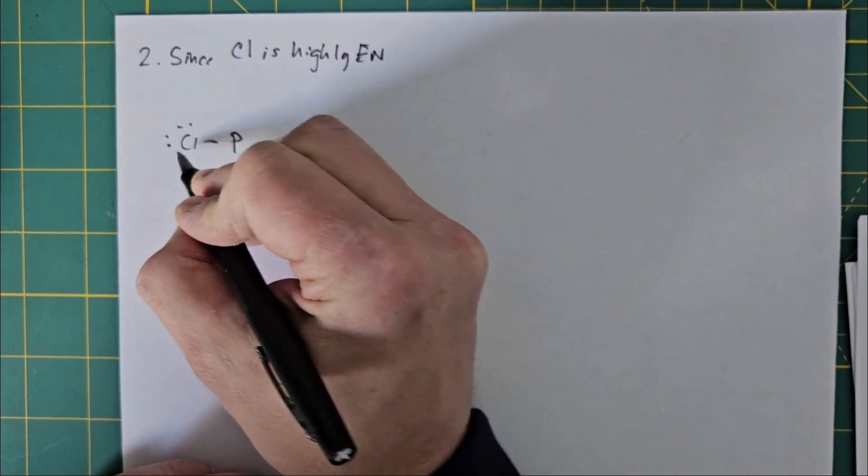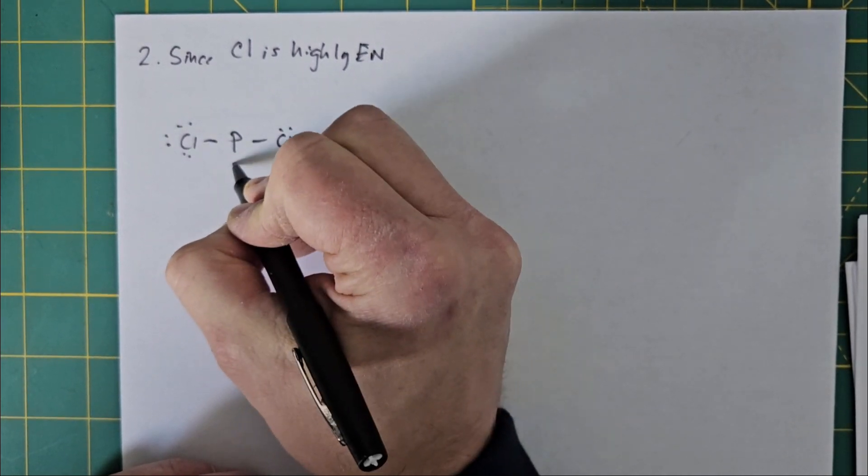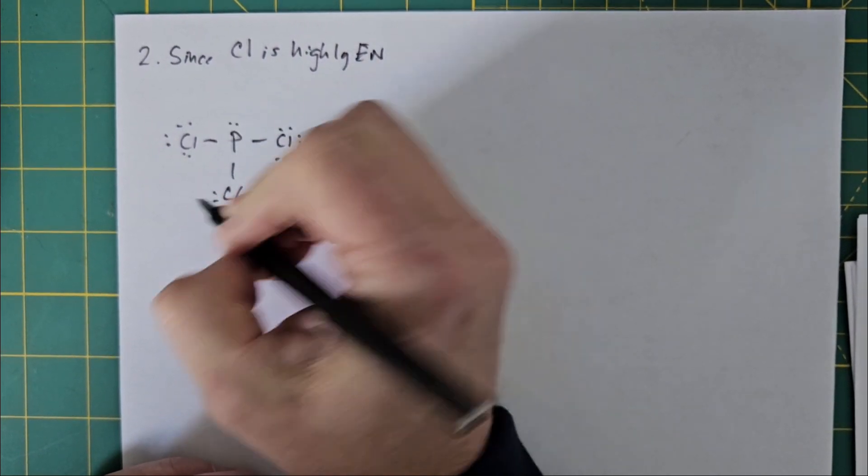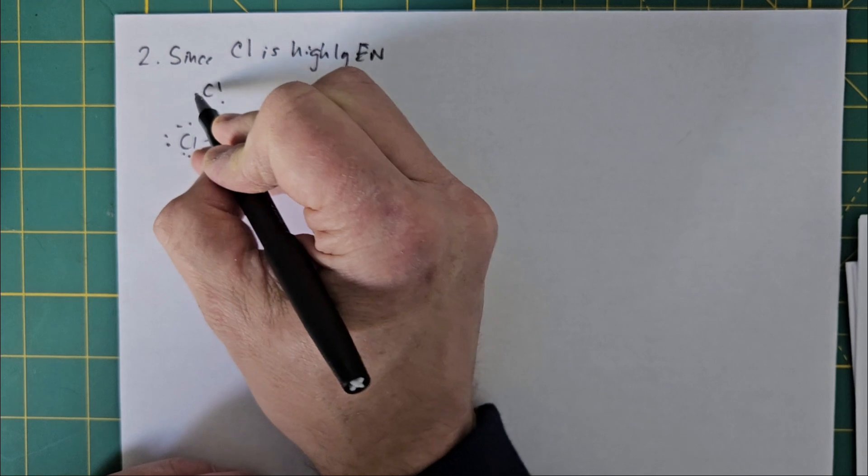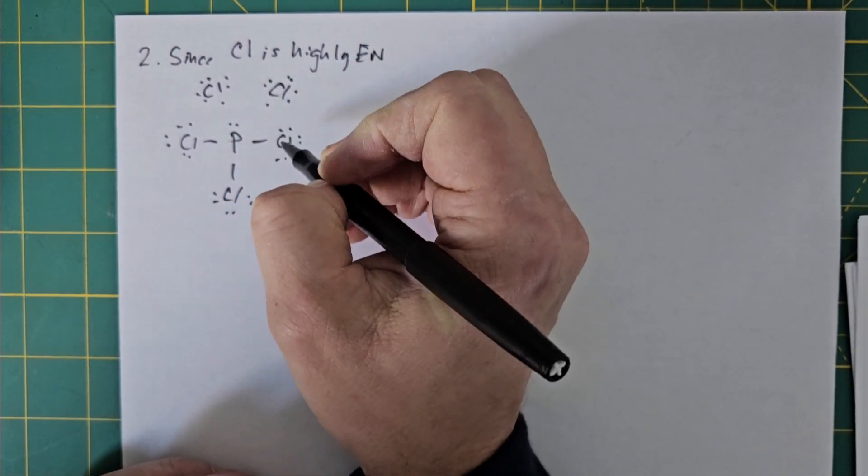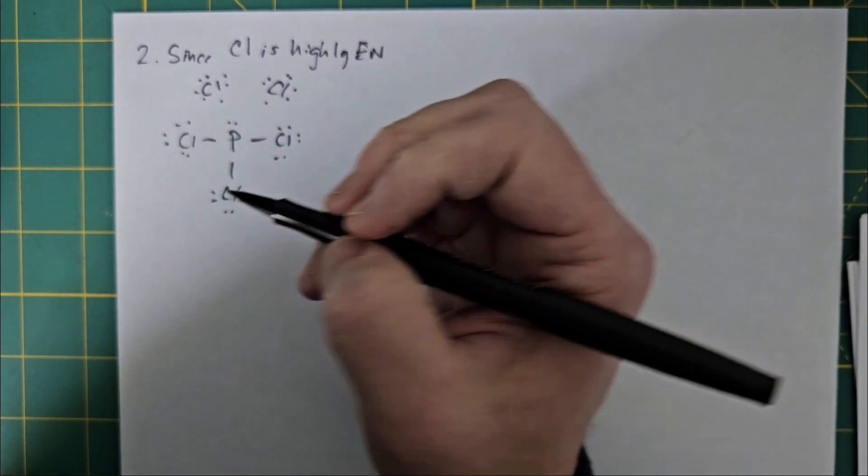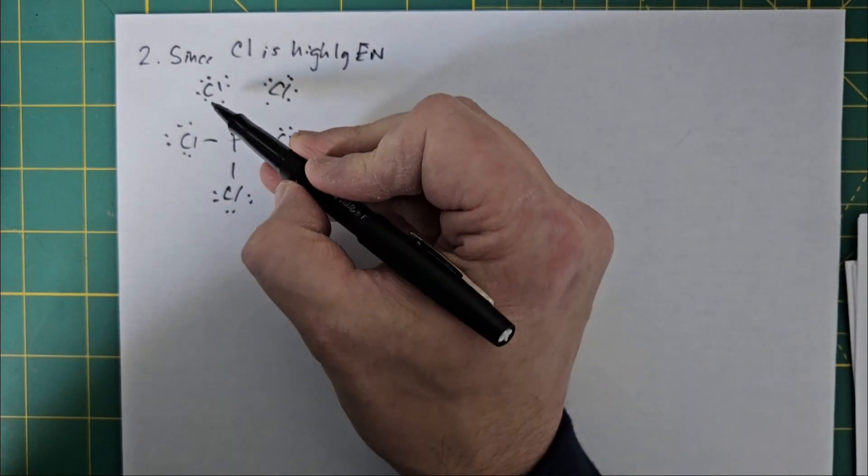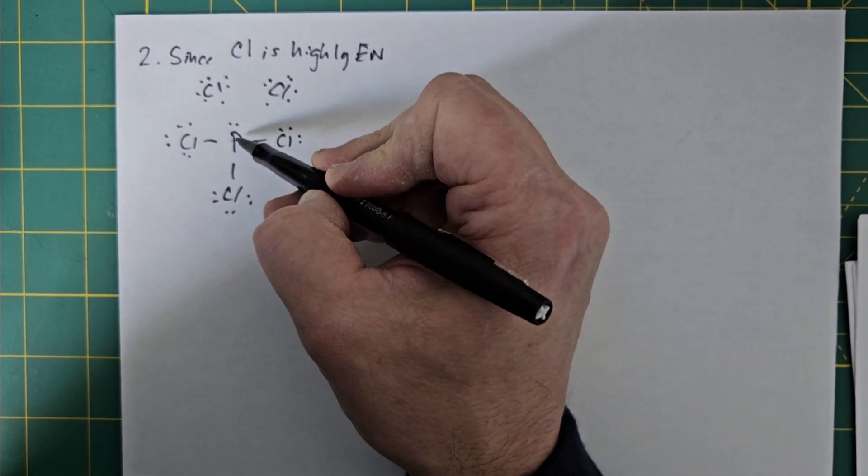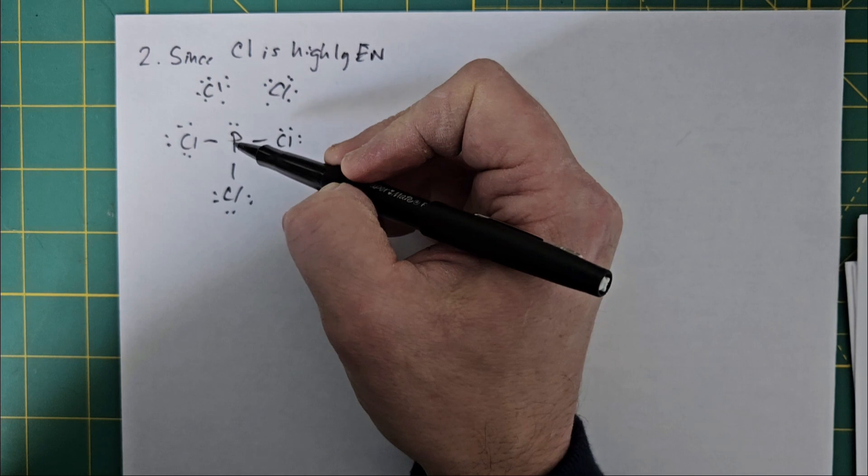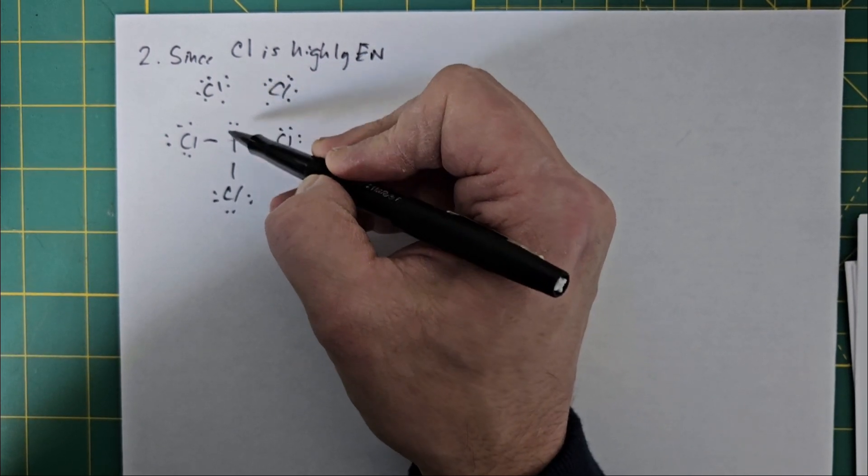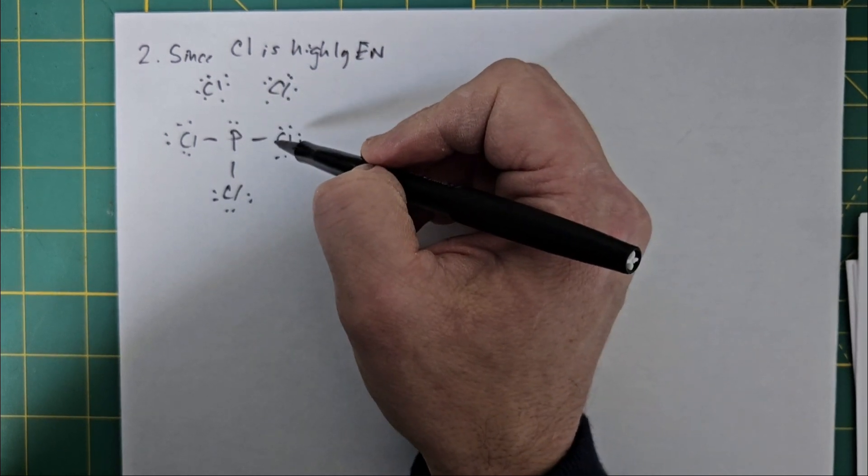If I start with a structure of phosphorus trichloride, here are the other two chlorines that I'm going to try to add in. Chlorine is highly electronegative, which means it's really, really attractive to electrons. It sees phosphorus as a source of electrons, but it can't bond because that's a full orbital, and that's an empty orbital, and you can only have two electrons in an orbital.